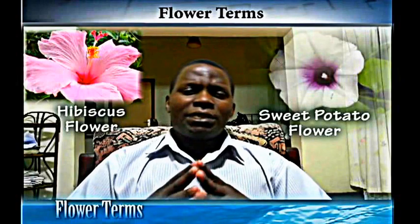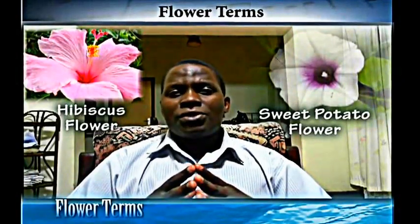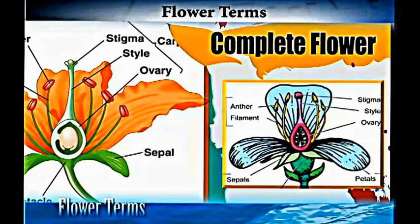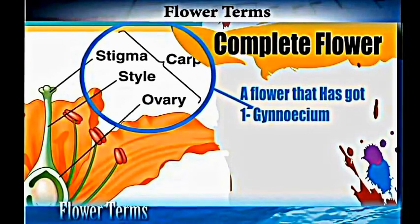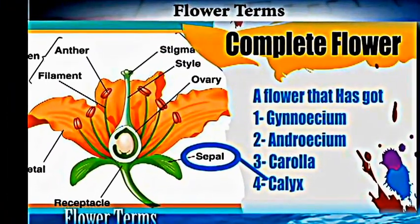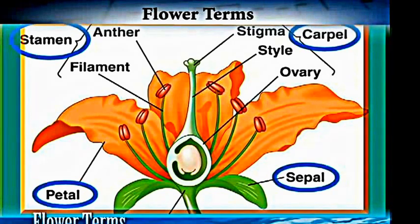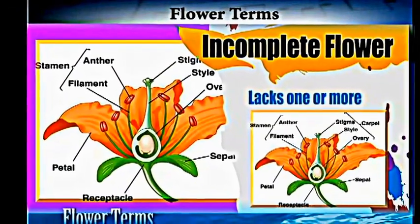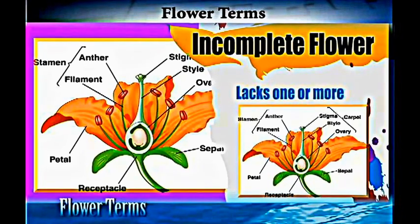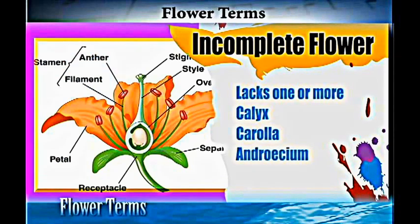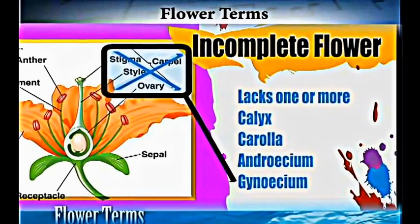The first term we normally use when describing a flower is 'complete flower.' A complete flower is a flower that has the gynoecium, the androecium, the corolla, and the calyx. If it has those four components, then it is a complete flower. A flower is said to be incomplete if it lacks one or more of those four — the calyx, corolla, androecium, and gynoecium.